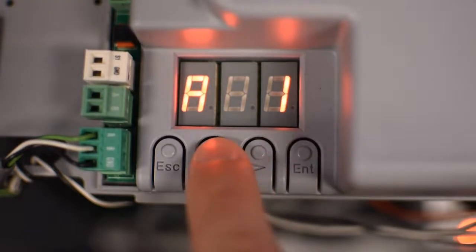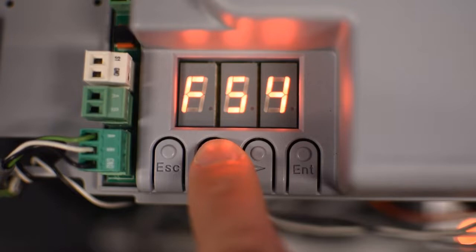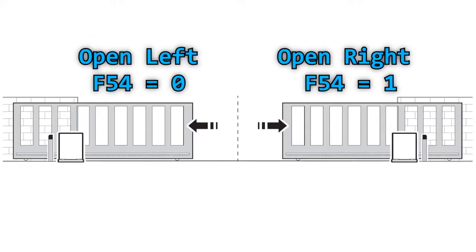Then we need to select the opening direction in F54. By default it's set to open to the left, but in my case the gate opens to the right so I'll select one.